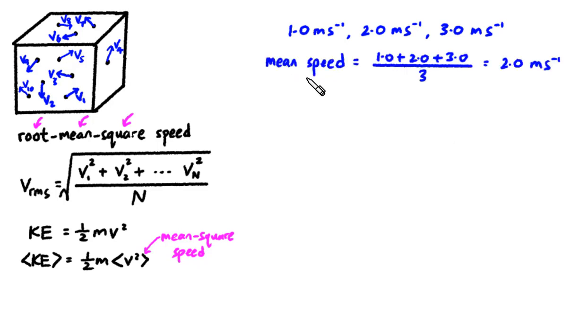If you are calculating the average speed, then all you have to do is to sum up the 3 speeds, divide by 3, and get 2.0 meters per second. That's the average speed of these 3 gas particles.